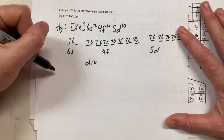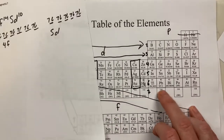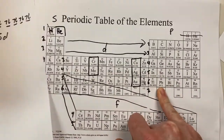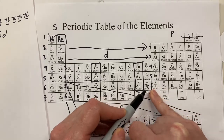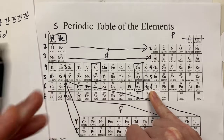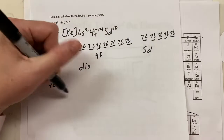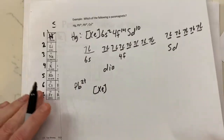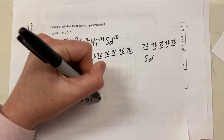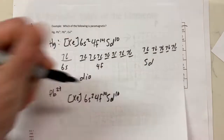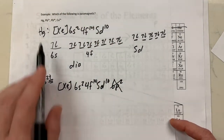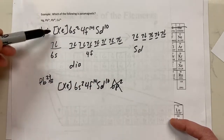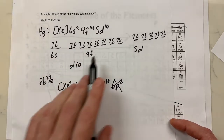Now we get to Pb2+. We're taking away the valence electrons from the p orbital — taking two electrons away brings us to the end of a block. We can write: xenon, 6s2, 4f14, 5d10 — with the 6p2 removed. This is isoelectronic with mercury, the same electron configuration, and this is diamagnetic.